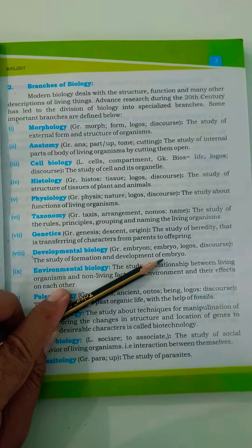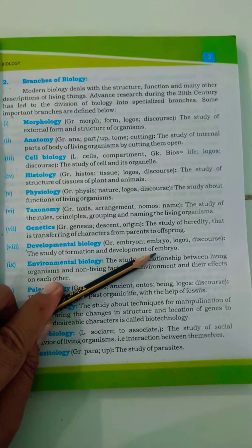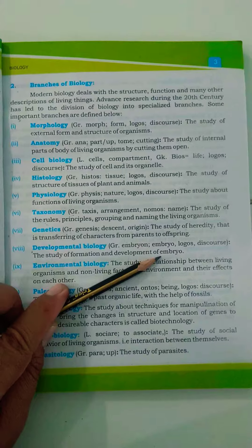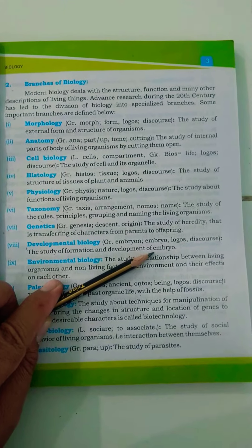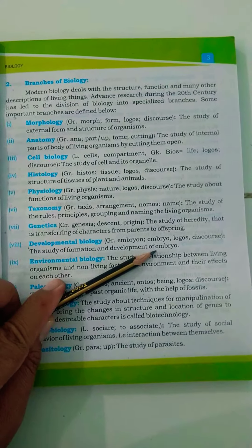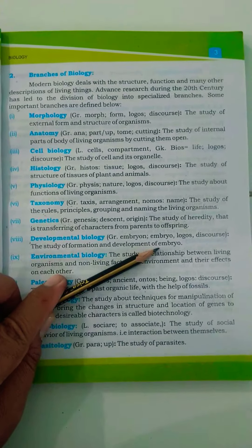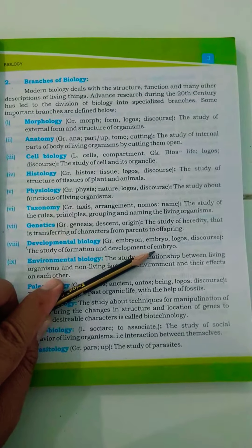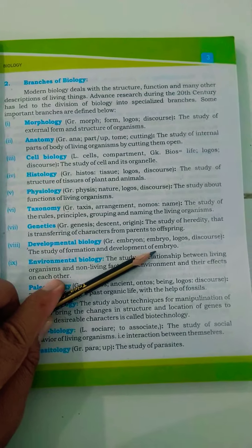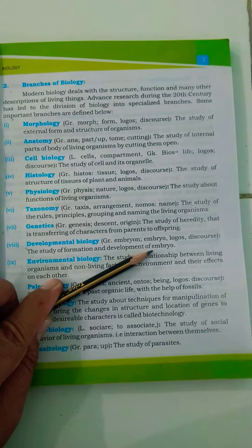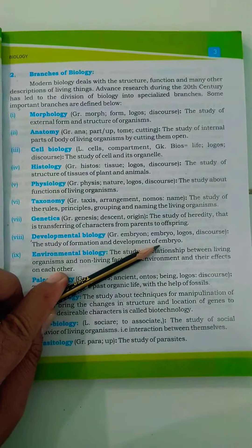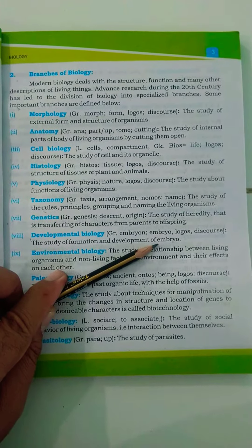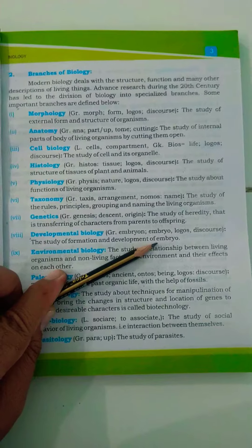Starting from embryo formation up to the development and birth of the new young one — that complete study and complete development of the embryo up to the giving birth of a child is known as the study of the embryo, or developmental biology. We can also call it embryology. So all the processes starting from embryo formation up to the birth of a child come under the branch of biology known as developmental biology.